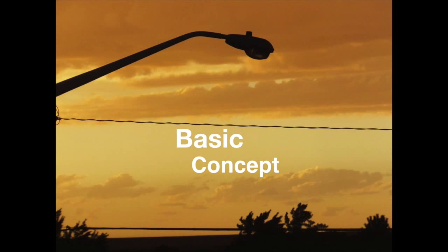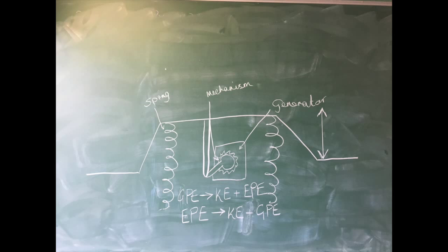The model for the electricity generating speed bump works by converting gravitational potential energy into elastic potential energy within the springs, as well as kinetic energy into a small rod which turns the generator on.